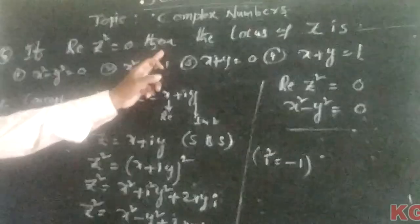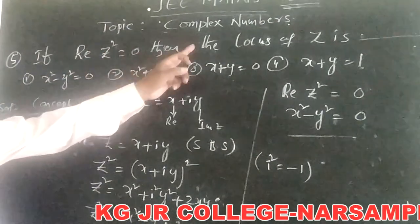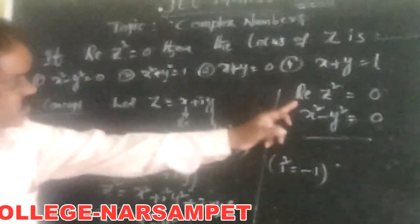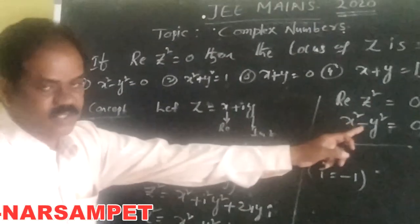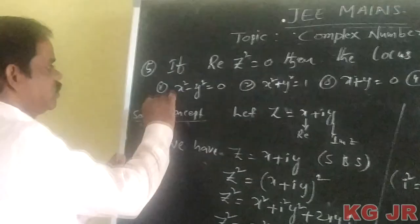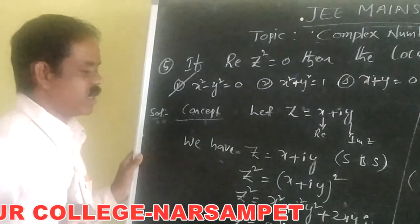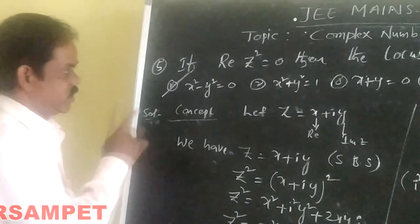We are told the real part of z squared equals 0. The real part of z squared is x squared minus y squared. Therefore x squared minus y squared equals 0, and the locus of z is x squared minus y squared equals 0. So the first option is the correct answer.